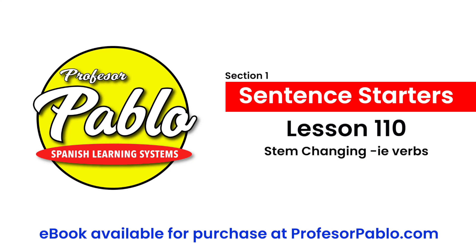Hopefully you're starting to see the pattern. The usted and ustedes commands are opposite vowel. Since these are ER and IR verbs, the opposite vowel is A, so the usted command ends in A. The ustedes command adds N: entienda / entiendan, pierda / pierdan, defiende / defiendan, invierta / inviertan, mienta / mientan.